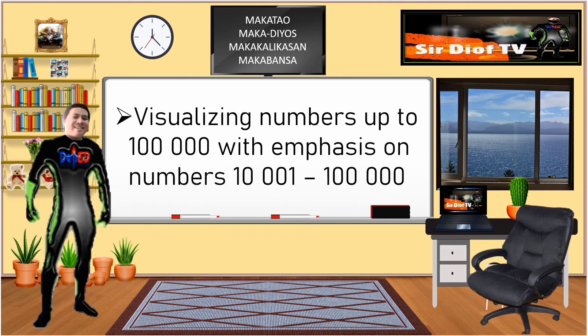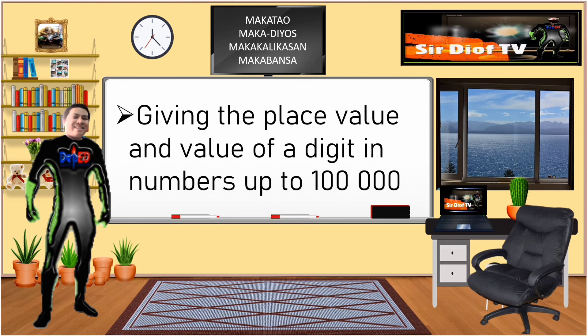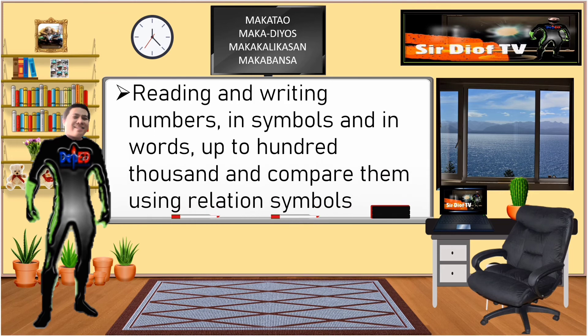Our lessons for this week are all about: visualizing numbers up to 100,000 with emphasis on numbers 10,001 to 100,000; giving the place value and value of a digit in numbers up to 100,000; and lastly, reading and writing numbers in symbols and in words up to 100,000 and comparing them using relation symbols.